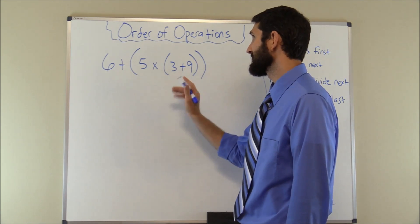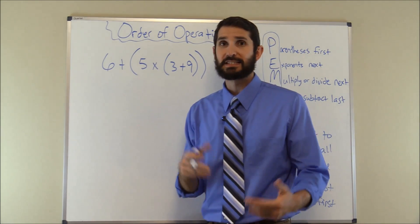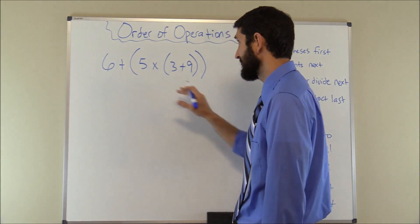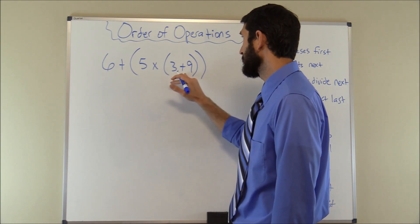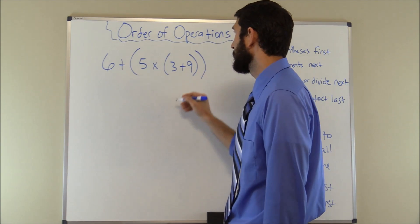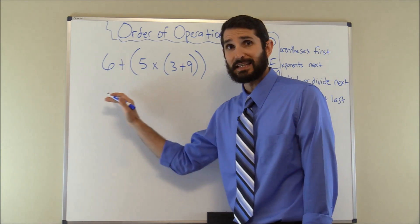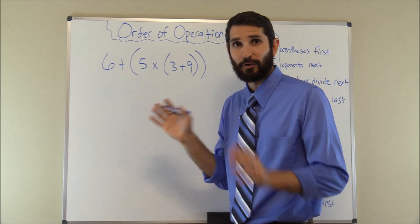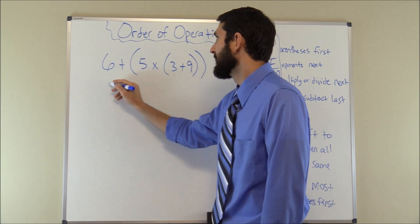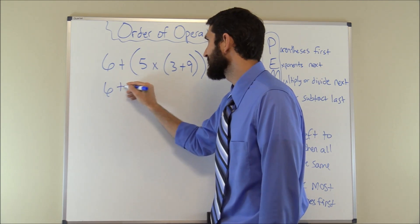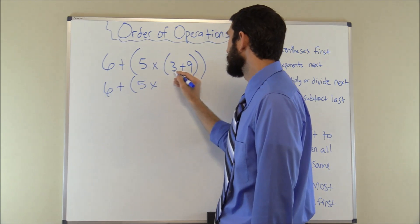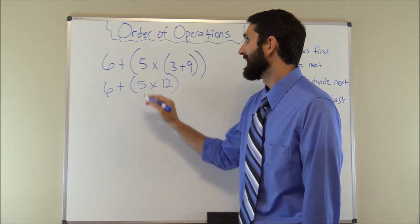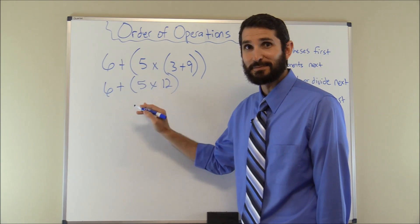We'll work our first problem: 6 + 5 × (3 + 9). The parts in parentheses come first in the order of operations, so we solve 3 + 9 = 12. The easiest way to do this is to keep rewriting the problem and just adding in the answer for each part — that'll keep you straight and keep you from messing up. So our new problem becomes: 6 + 5 × 12.